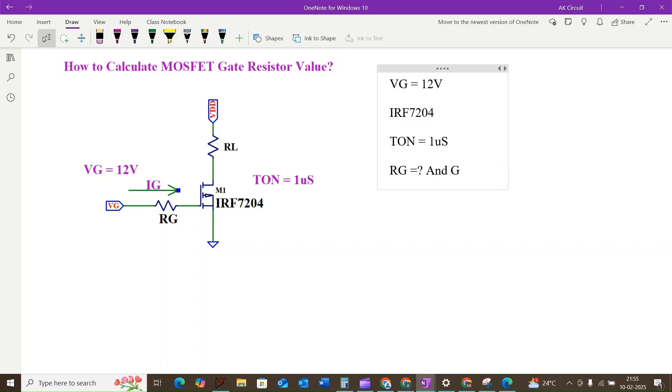And the gate current IG. We know that the MOSFET has internal capacitance as CGS between gate to source terminal.